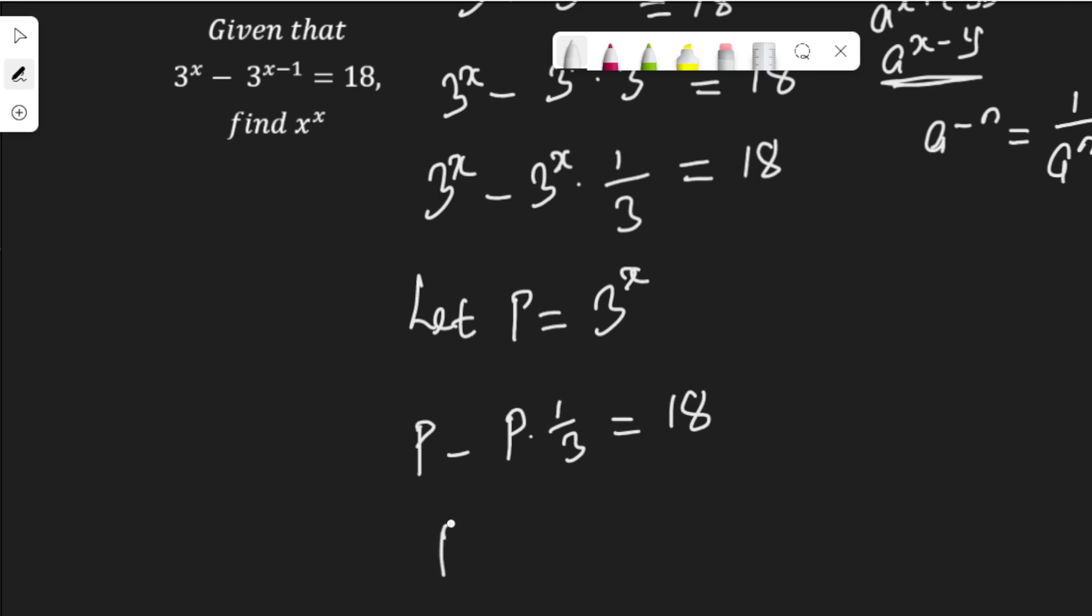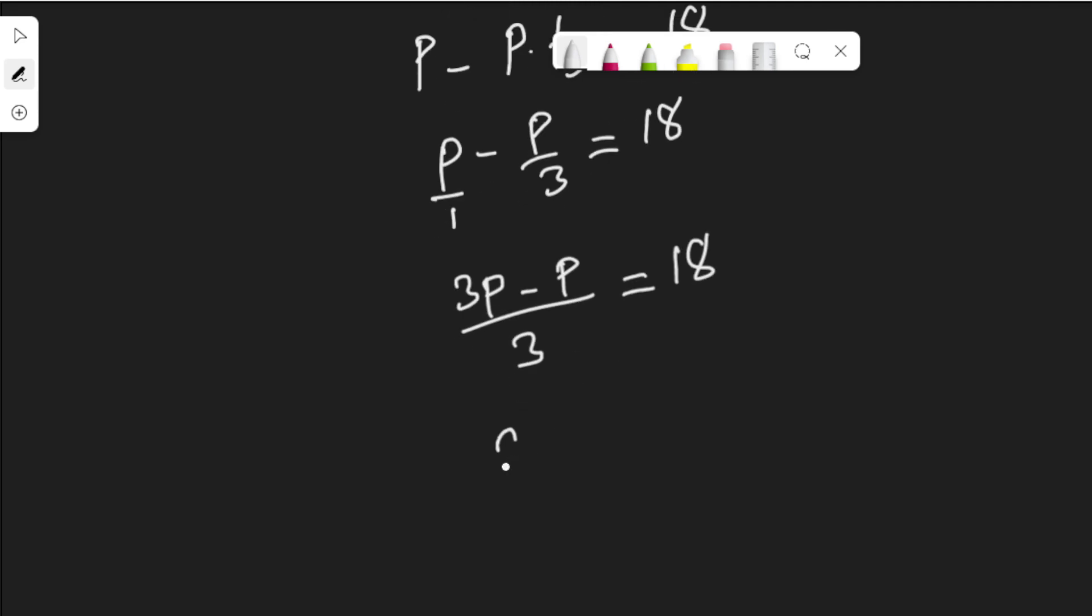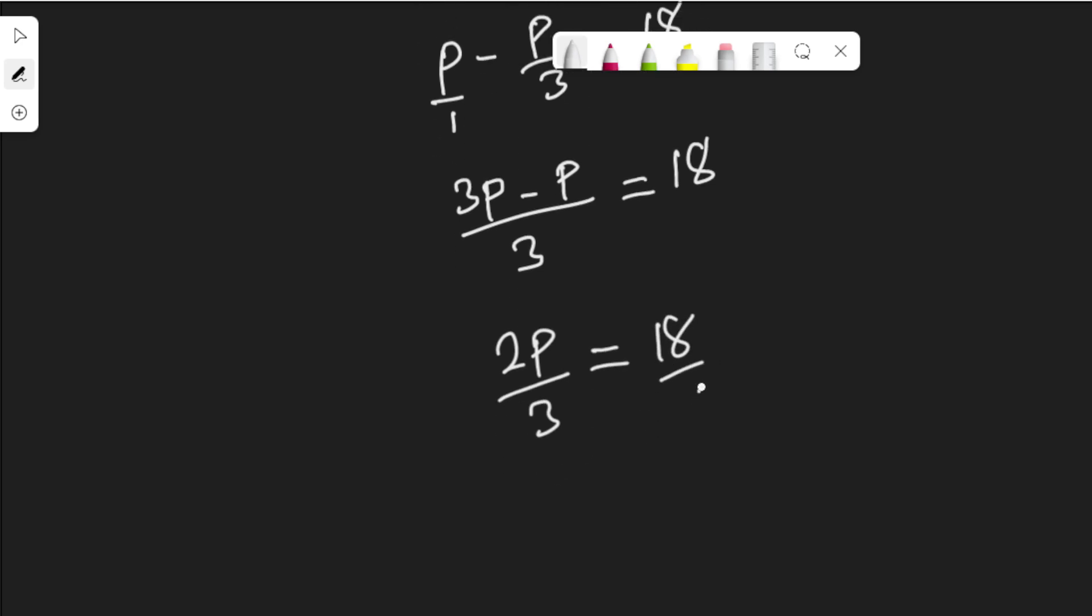Which is p minus p over 3 equal to 18, since p times 1 is p. Now solving this fraction here, this is over 1, so this would be 3p minus p over 3 equal to 18. Now 3p minus p is 2p. So 2p over 3 equal to 18. Cross multiply, 2p is equal to 3 times 18.